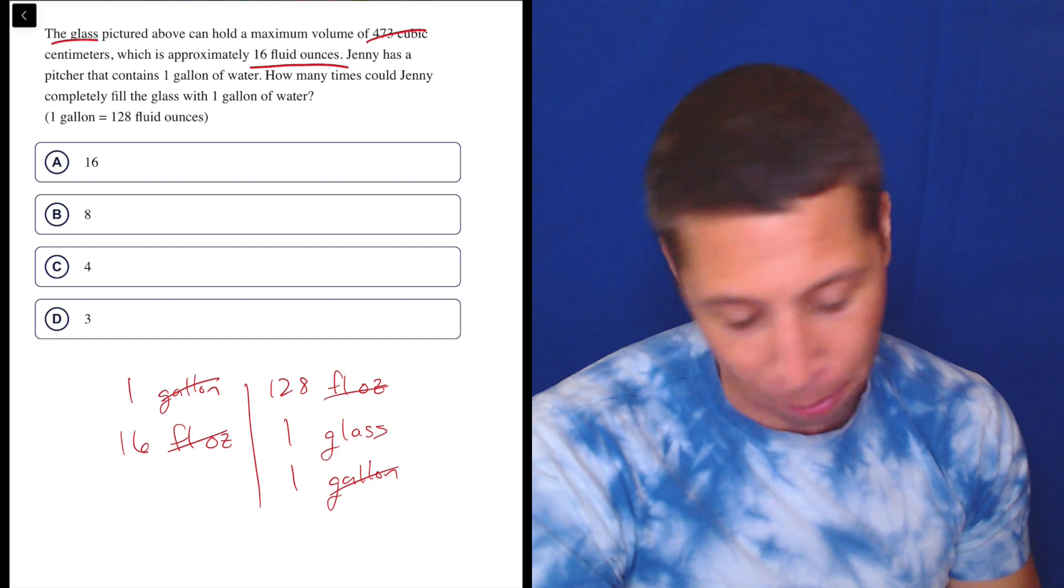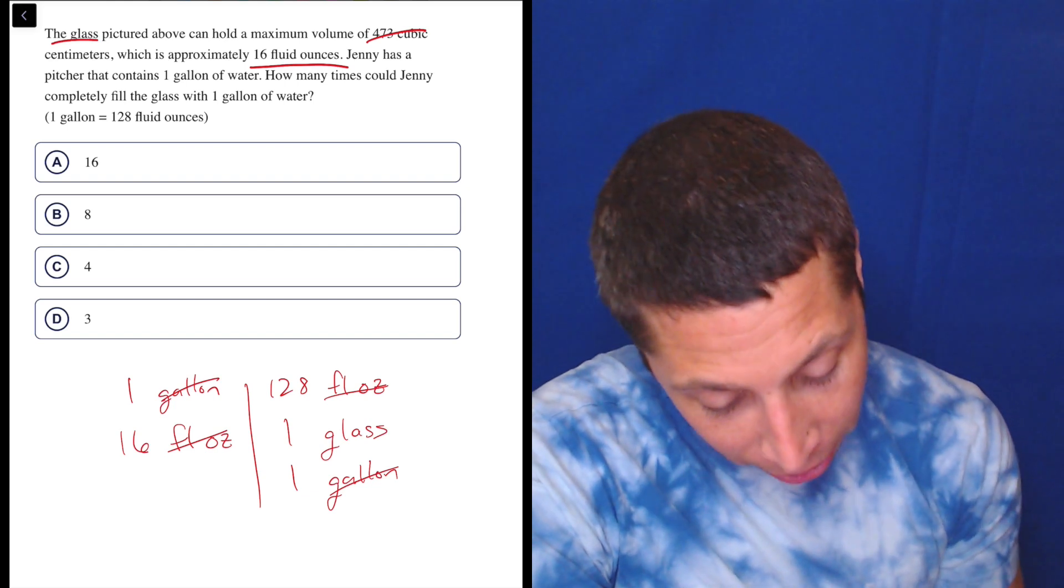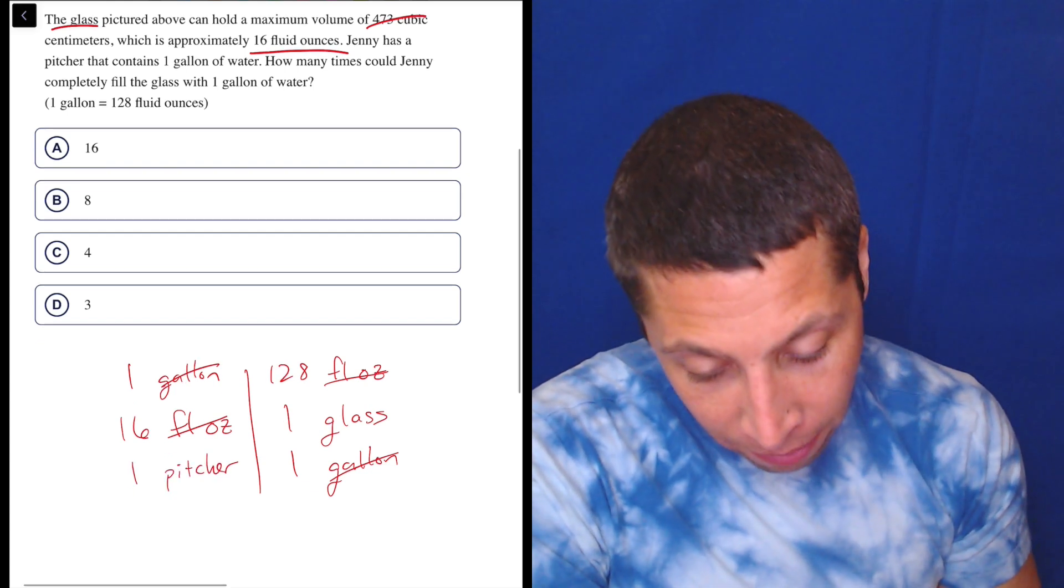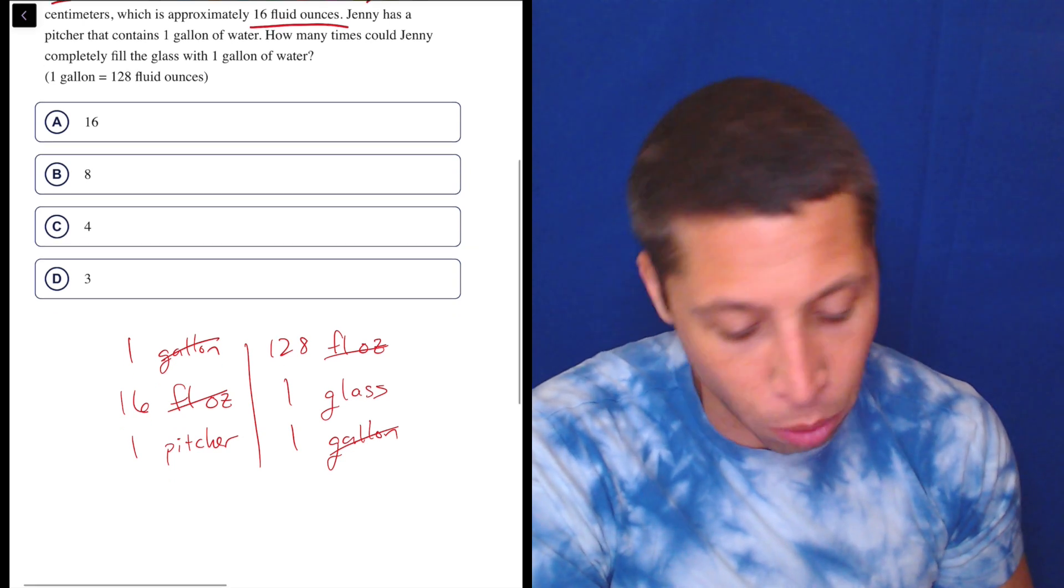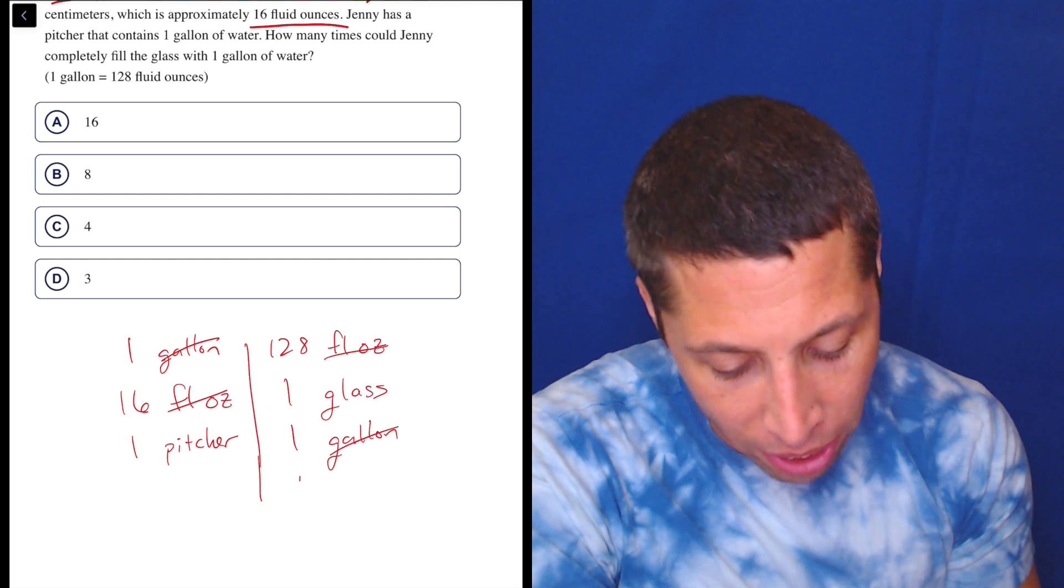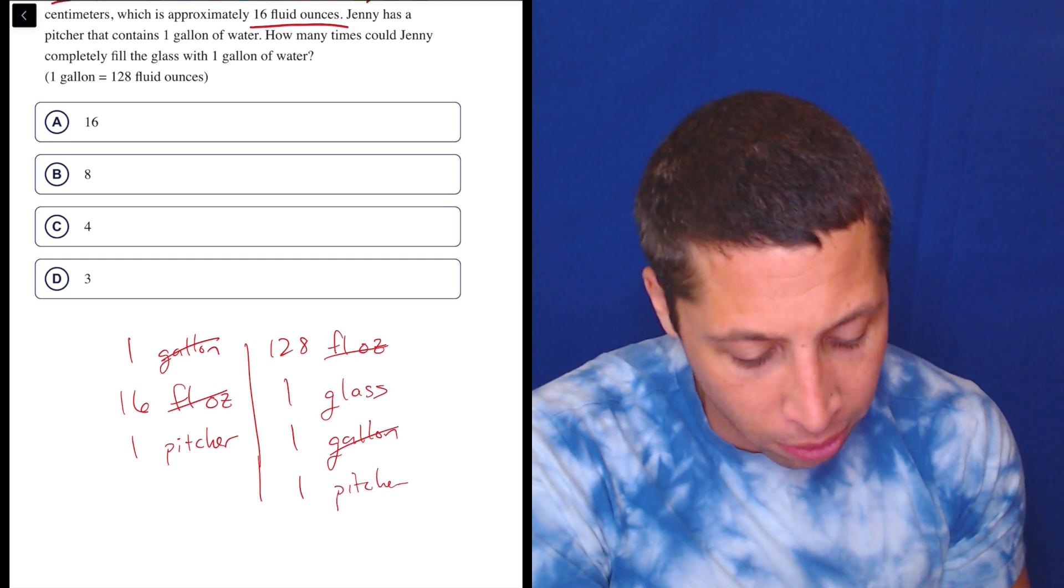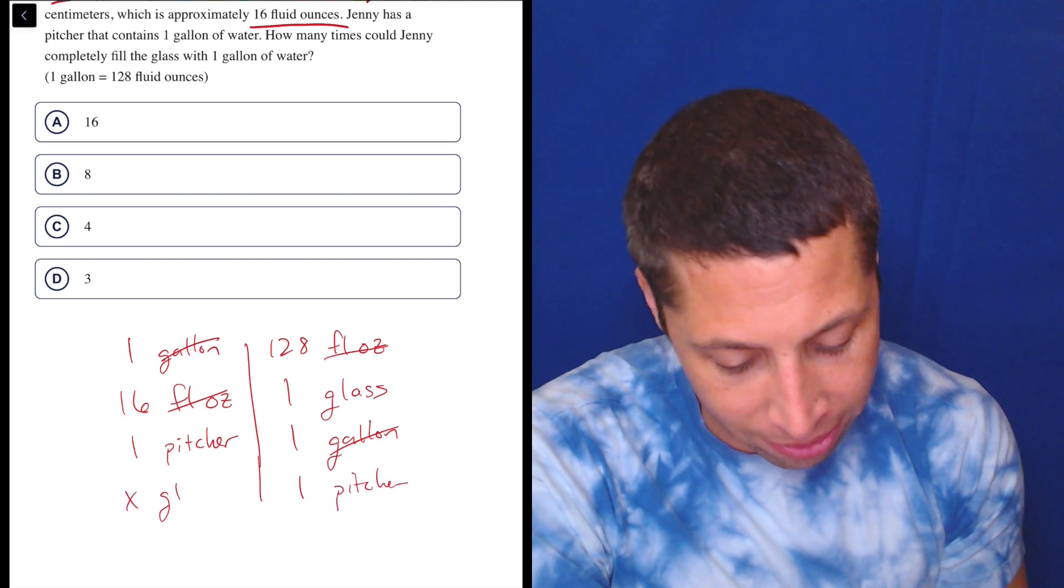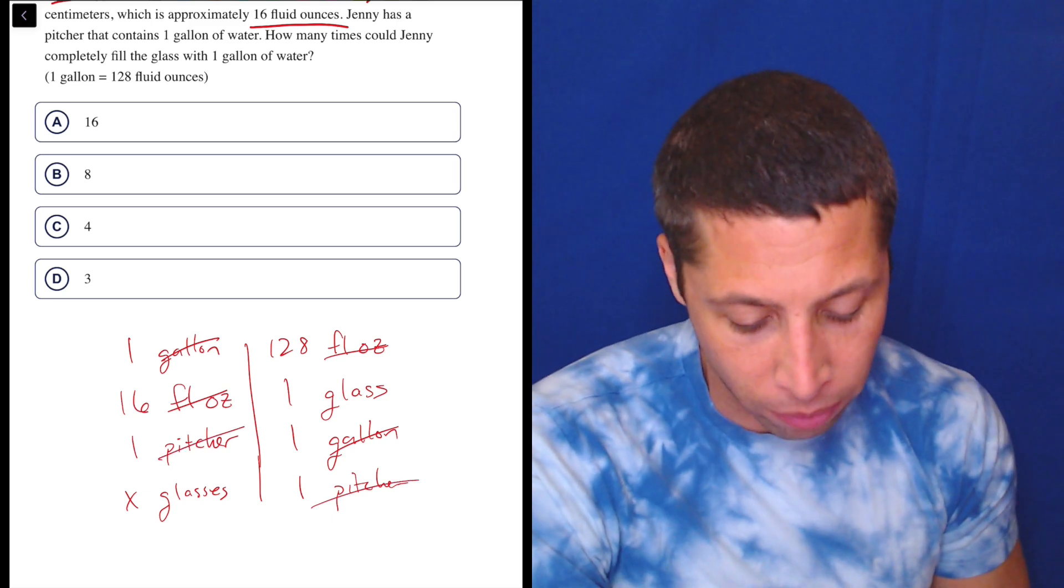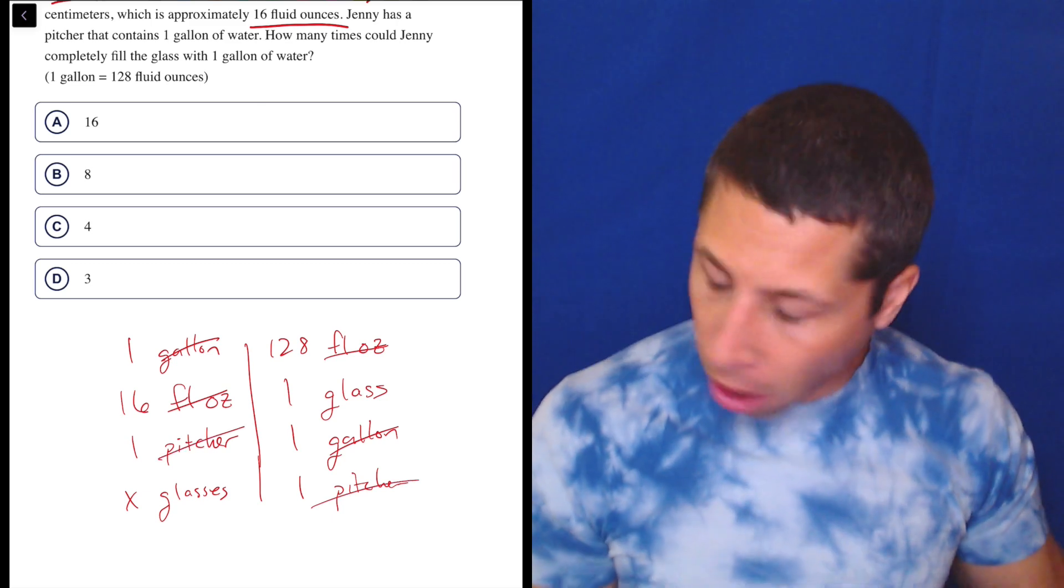We could have kind of skipped that and just gone one gallon is X glasses from the start. But the point I'm trying to make here is this is a very flexible system. And then they're asking how many times could Jenny fill the glass with one gallon of water? So we have one pitcher is how many glasses. Notice that the pitcher thing ends up not mattering.